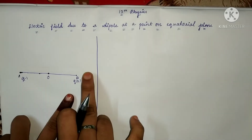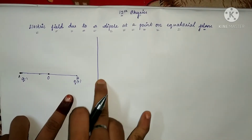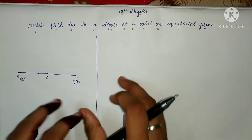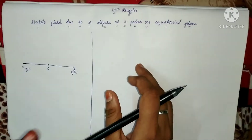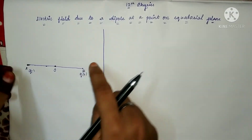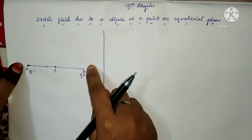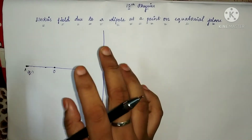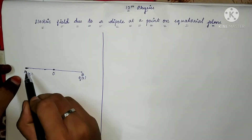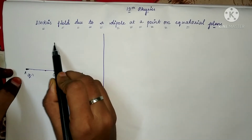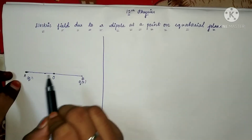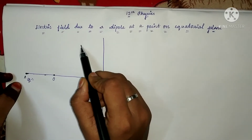Now, if we look at the equatorial line, I draw an imaginary point extended from the scene. That point will experience an electric field, and we will analyze its effect. The equatorial line is perpendicular to the axis, and I will choose a point on it.